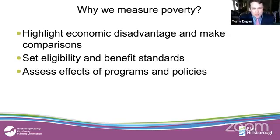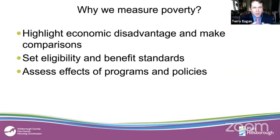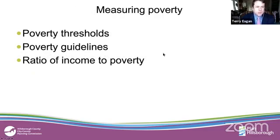If we understand what poverty is and why it's important, the question becomes: how do we measure it? It wasn't until the mid-1960s that the federal government came up with a mechanism and formula to identify how a household with householder and dependents falls into poverty. We measure poverty to highlight economic disadvantages, set eligibility and benefit standards, and assess effects of programs and policies. When we measure poverty, we're looking at one thing, but it can be expressed through different measurements: poverty thresholds, poverty guidelines, and the ratio of income to poverty.